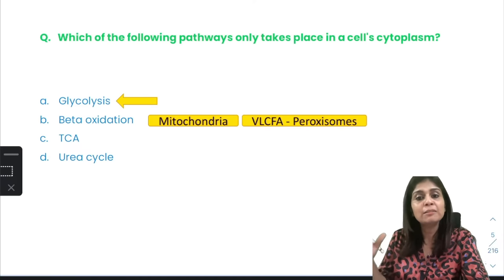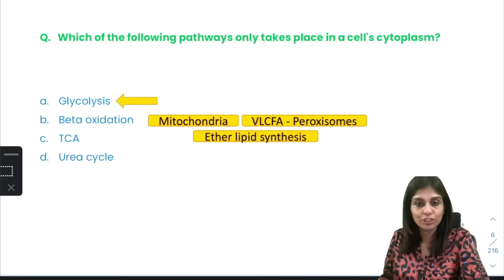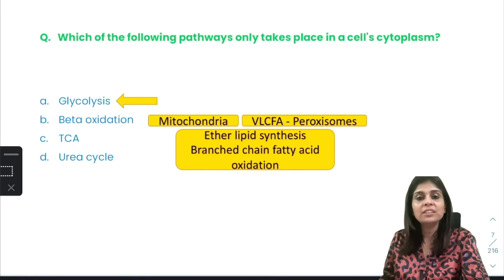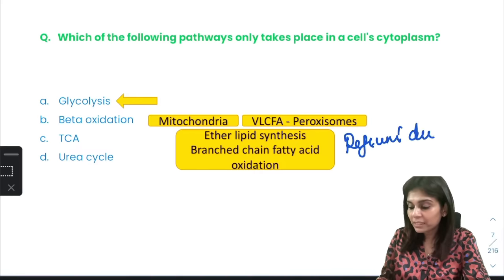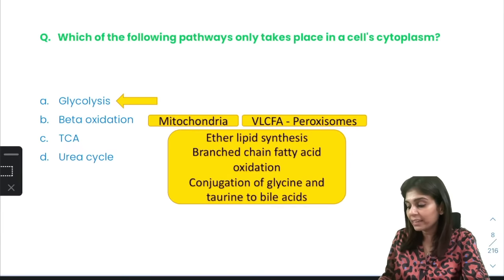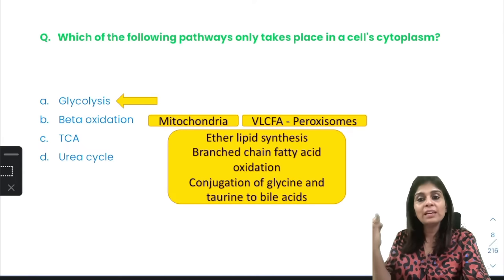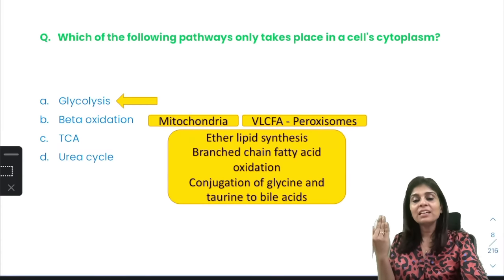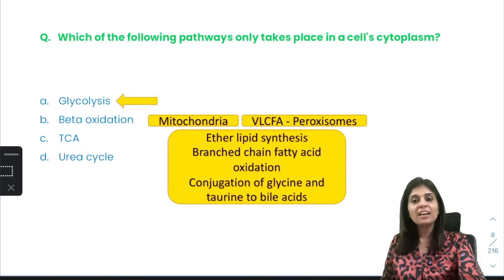Very long chain fatty acids get oxidized in peroxisomes. Other peroxisomal functions include ether lipid synthesis — ether lipids are plasmalogens — and branched chain fatty acid oxidation. A defect in alpha oxidation of branched chain fatty acids causes Refsum's disease, which is a peroxisomal disorder. Peroxisomes also perform glycine and taurine conjugation of bile acids. Zellweger syndrome is also related to peroxisomal dysfunction.